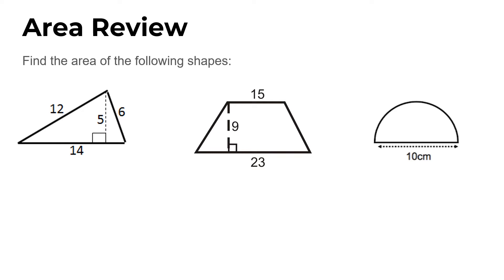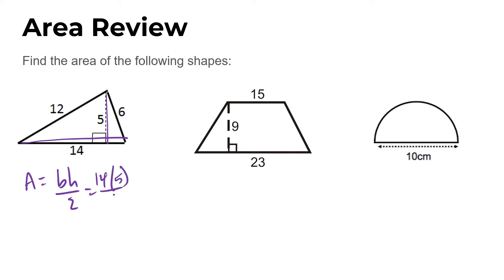Hopefully you solved these already and just want to check your answers. The first example is a triangle. We use the height of 5 and the base of 14 — those are the two perpendicular dimensions. The area of a triangle is base times height divided by 2. We use base 14, multiply by height 5, divide by 2: 14 times 5 is 70, divided by 2 is 35. So the area of that triangle is 35.